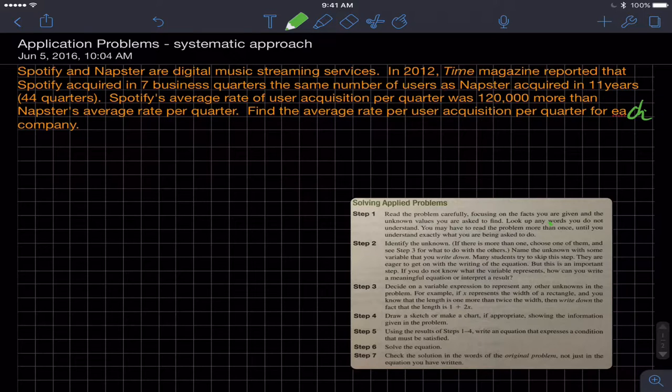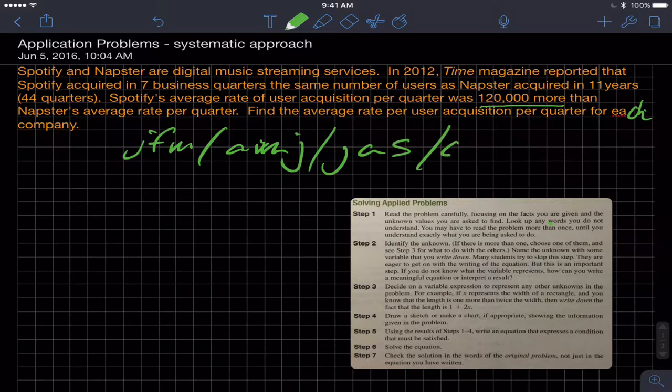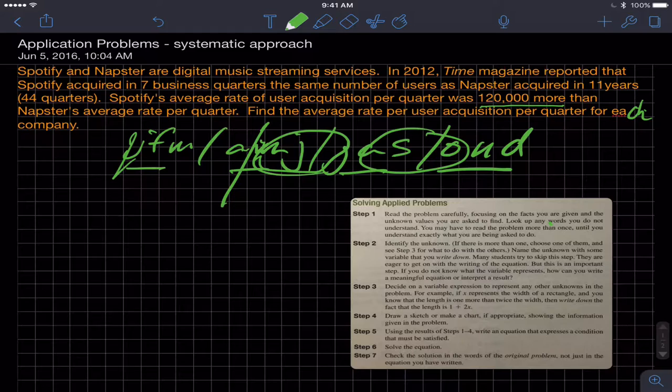Spotify is grabbing users or acquiring users at a faster rate than Napster, in fact 120,000 more per quarter than Napster. What is a quarter? If you're not sure, a business quarter is a quarter of the year. A quarter is, for instance, January February March, April May June, July August September, October November December. So this would be a quarter, that would be a quarter, that'd be a quarter, that'd be a quarter. It's not always done that way; they can chop up quarters any way they want in terms of their fiscal year, so you don't have to start in January. They could start here and go every three months is a quarter.